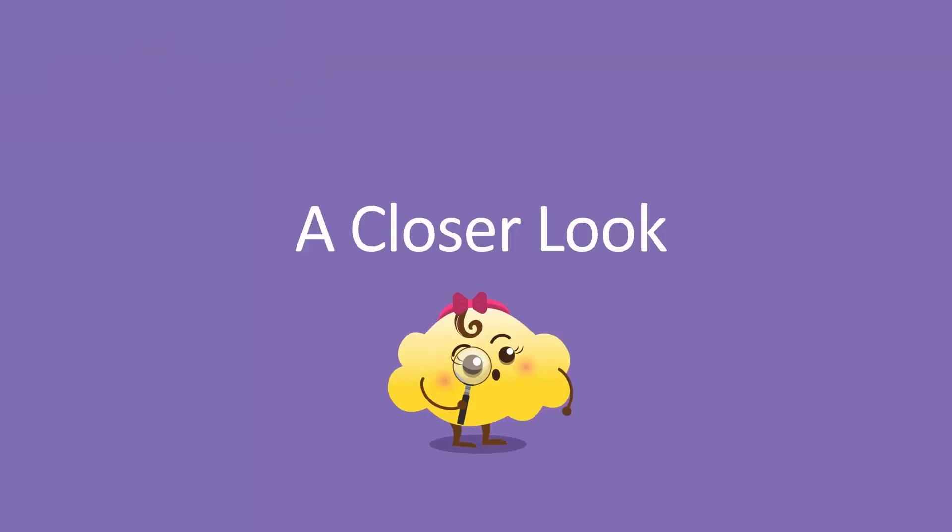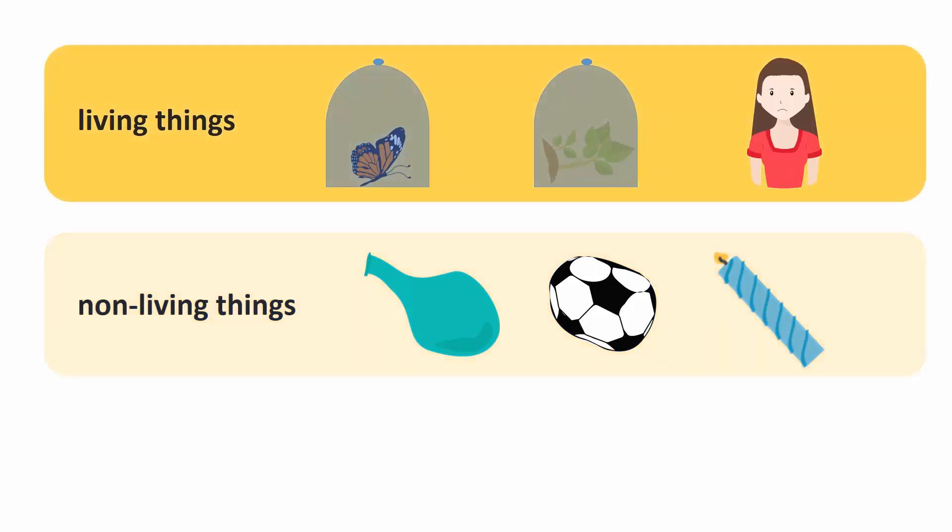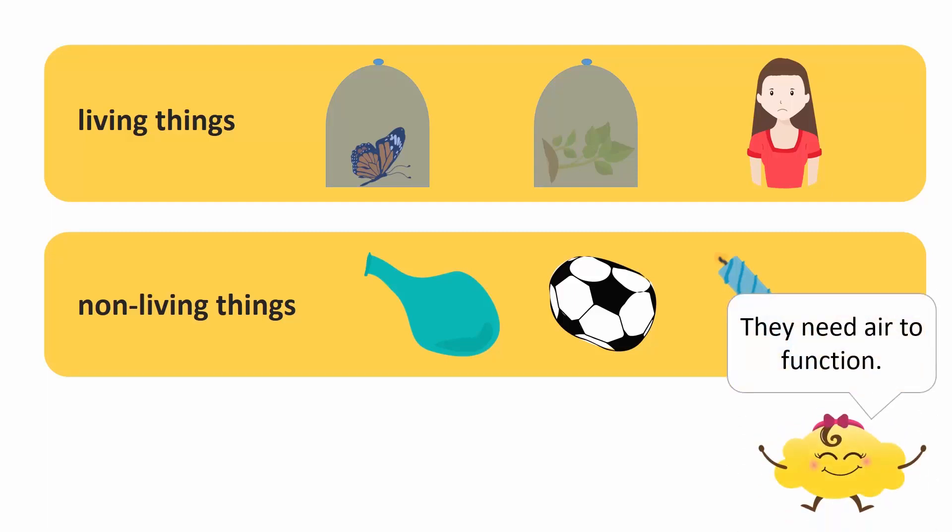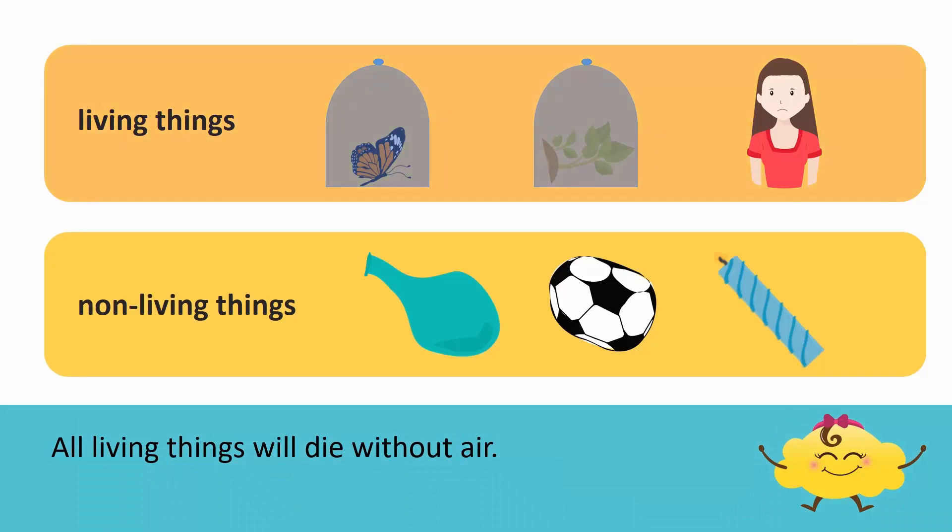Let's take a closer look at how important air is for living and non-living things. Row 1 shows living things and row 2 shows non-living things. What is the one thing common between row 1 and row 2? All these things need air to function. All living things will die without air. The non-living things in row 2 need air to become useful.